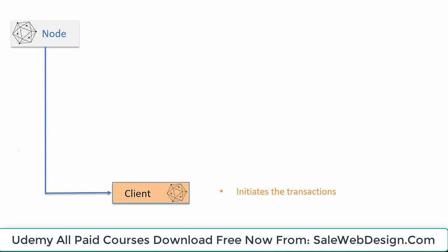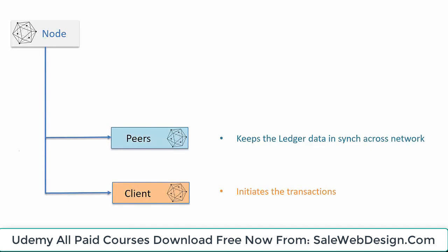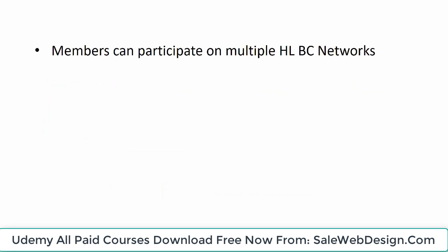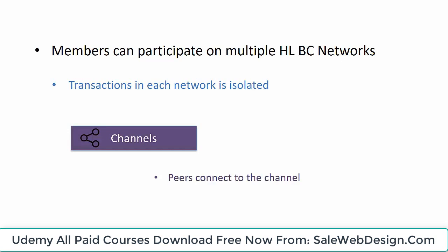The three types of nodes are: first, the client node, which is the node that applications use for initiating transactions; second, peers, which are the nodes that keep the ledger in sync across the network; and third, orderers, which are the communication backbone for the blockchain network and are responsible for the distribution of transactions. Members can participate on multiple Hyperledger blockchain networks. Transactions in each network are isolated, and this is made possible by what is referred to as the channel. Peers connect to channels and can receive all transactions broadcasted on that channel. Each channel has its own independent ledger.